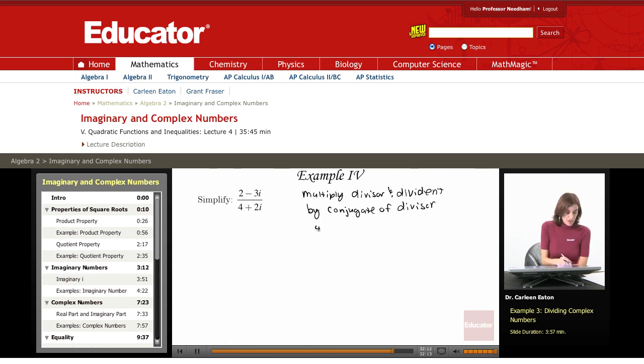So I'm looking here at 4 plus 2i. Its complex conjugate is 4 minus 2i. So I need to multiply this numerator and denominator by 4 minus 2i.